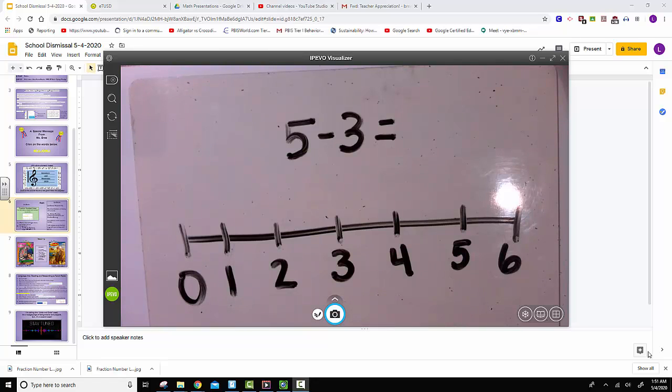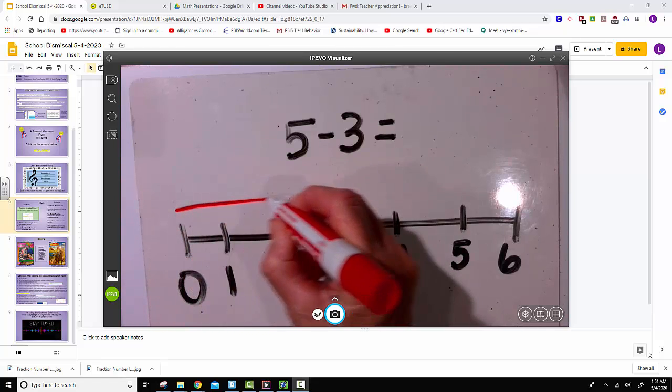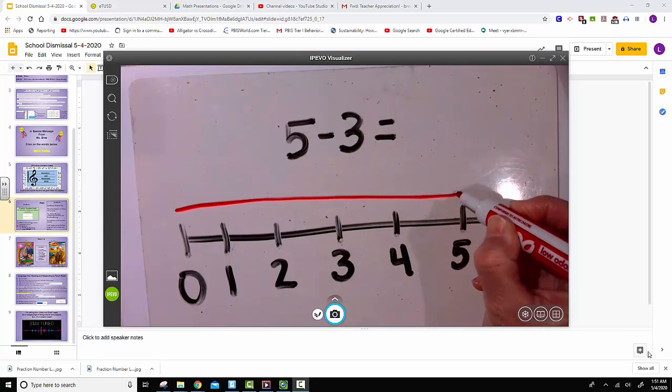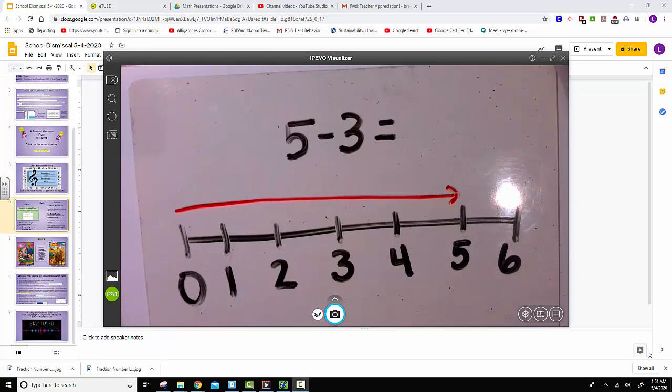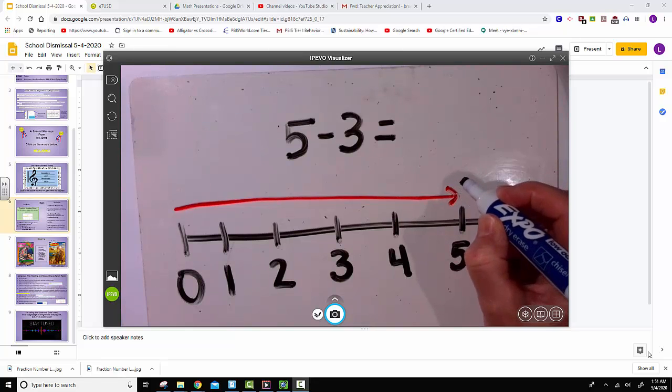The publishers suggest starting at zero and drawing an arrow to the minuend, and in this case the minuend is 5. The next step is to subtract the subtrahend, and in this case it is 3. We're subtracting 3 from 5.